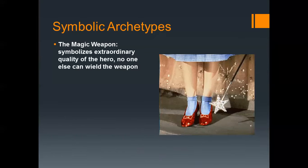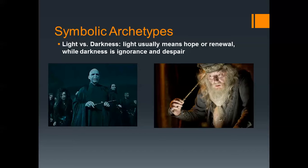Let's move on to symbolic archetypes. The magic weapon is a very common one — it's basically what the hero needs in order to complete the quest. Usually no one else can wield the weapon; only the hero can make it work. There's a picture of Dorothy wearing her magical red heels. Then there's light versus darkness: light usually suggests hope, renewal, or intellectual illumination, while darkness implies the unknown, ignorance, and despair. That's Voldemort representing darkness and Dumbledore representing light.